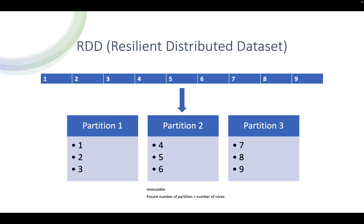Typically when creating RDDs in Spark, you have to make sure that the number of partitions you create when reading the data is greater than the number of cores across your cluster. That is going to help you gain the maximum amount of parallelism. We are going to cover this topic in future as well, specifically when we talk about how to increase the efficiency of Spark. This is just a high-level revisit of the RDD concept.